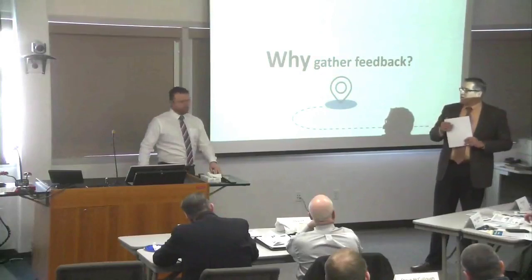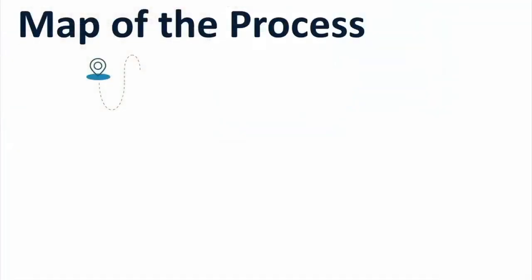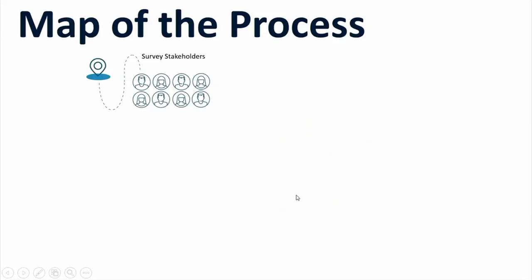Nick's going to start off with the process piece. So the map of the process — we survey our stakeholders, and we just finished up with our parent survey. There are two different platforms to Youth Truth: the student survey platform, which is a fantastic tool, but there's also a really rich parent survey tool. We gave that K-12 this year and just got the data back in January. So we're engaging with our leaders and principals in this process right now. In around October, we surveyed all our parents.